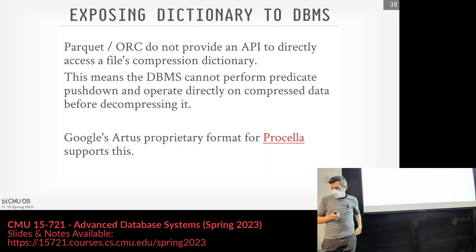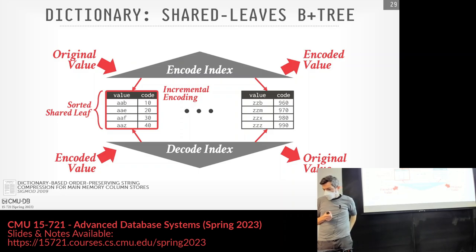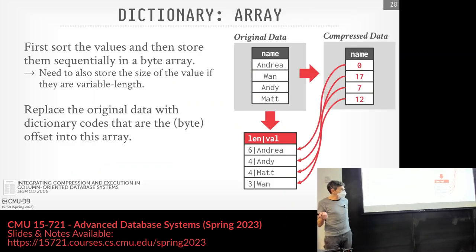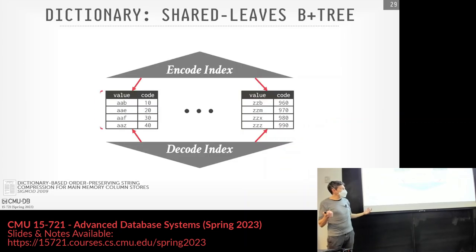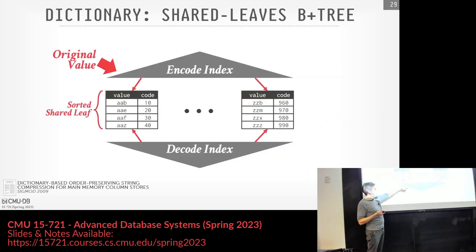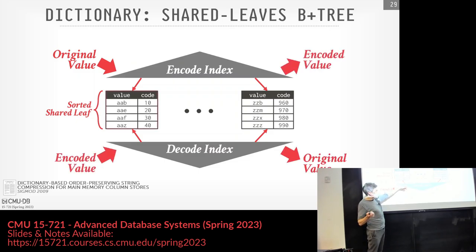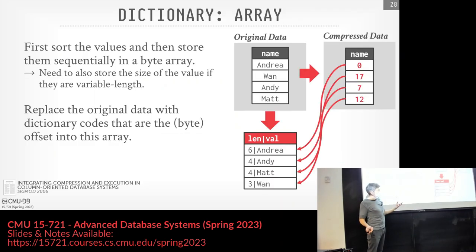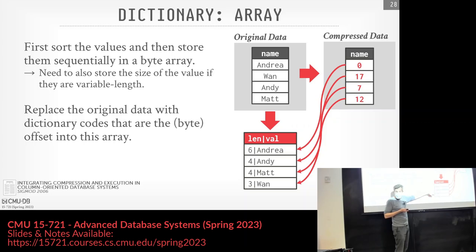Student question: on the previous slide, if we're only storing the value-to-code map, how do we decode the other way around? For the B+ tree, an encoded value does a lookup on the index, which points to an offset inside the leaf node — so you can look up in both directions. For the array, if you want to encode, you have to do a sequential scan, because even though it's sorted the strings are variable length. You could maintain a separate offsets table but that takes space. You can also put a Bloom filter in front to see whether the string you want is in there first.